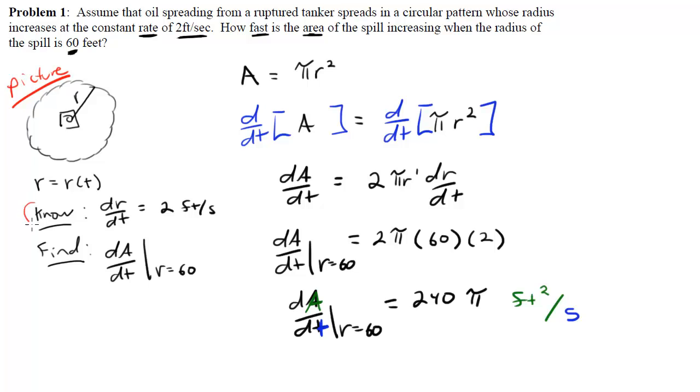Once we have the picture, we want to do our know and find. So what rate or rates do we know? What rate or rates do we want to find? So we kind of get the setup. Once we have that, we got to come up with the equation. The equation is going to be the formula that kind of brings everything together. What are we talking about? We're talking about area. We're talking about circle. Well, then I'm going to write area of a circle. Area equals πr².